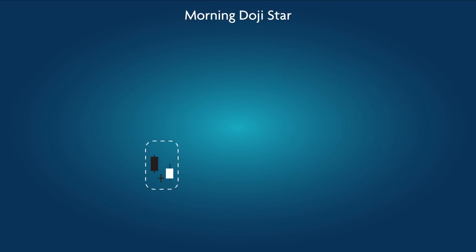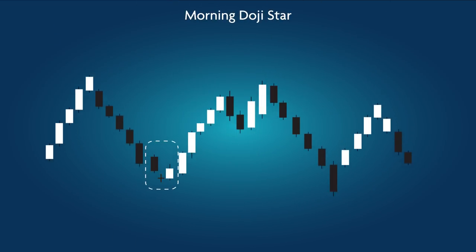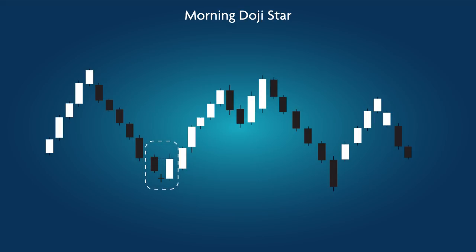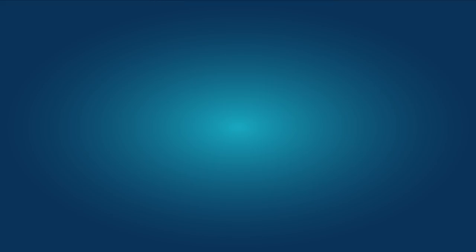Morning Doji Star: a bullish pattern opposite to that of the Evening Doji Star. Here the Doji indicates pattern reversal after the black candle. The clear candle following the Doji rises at least halfway above the body of the black candle preceding the Doji.